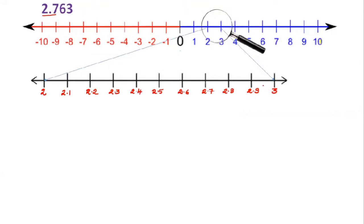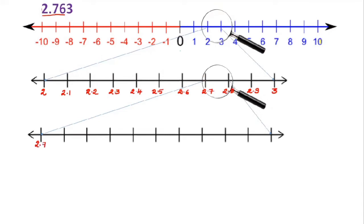Now take the second digit after the decimal point, so the number will be 2.76. 2.76 lies between 2.7 and 2.8. Divide the space between 2.7 and 2.8 into 10 equal parts. Imagine you are having a magnifying glass. It looks like this: 2.71, 2.72, 2.73, 2.74, 2.75, 2.76, 2.77, 2.78, 2.79, then 2.8.